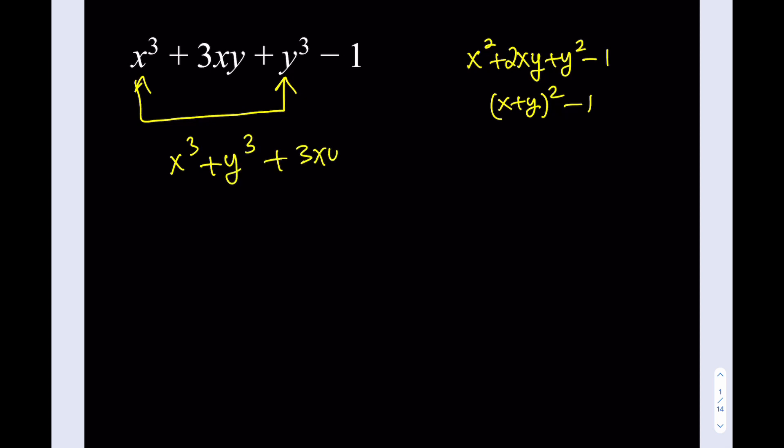All right. So I'm going to write it this way. Now, obviously, there's a formula for x cubed plus y cubed, right? We can factor it as x plus y multiply by x squared minus xy plus y squared. But guess what? This is not very helpful in this case. Why? Because I'm not able to use the 3xy that way.